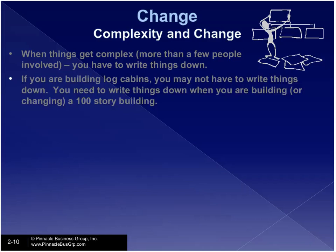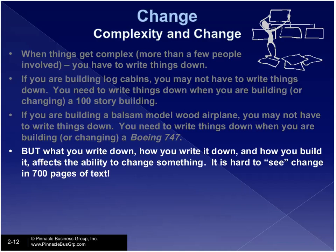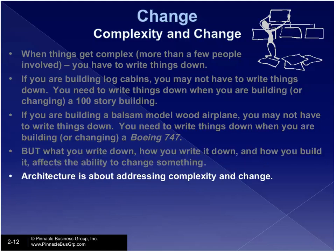If you're building a balsam-wood airplane you may not have to write things down, but you've got to write things down if you're building or changing a Boeing 747 — especially if I'm in it flying over water at night. What you write down, how you write it down, and how you build it affects the ability to change something. Change comes from two things: architecture and the concept of assemble-to-order. This is the baseline for managing change, and it's very hard to see change or strategy in 700 pages of text.